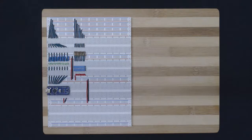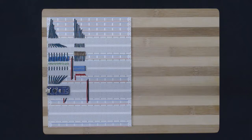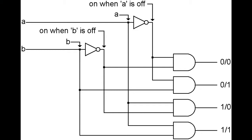Even though we're not going to be using decoders in this project directly, they're still a very useful circuit to know. So I'm going to take a few minutes for a little side project and look at them. We have a diagram here for a 2x4 decoder from page 48 of John's book. The idea behind the decoder is that it has a certain number of inputs — in this case 2, A and B — and for each combination of input values for A and B, there is an output that represents that combination.